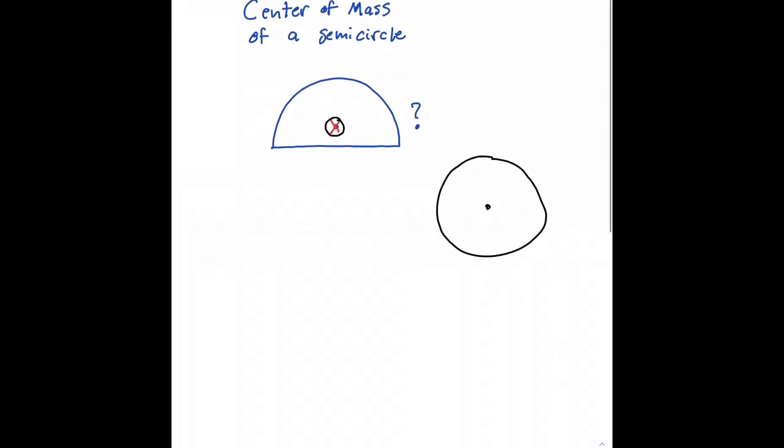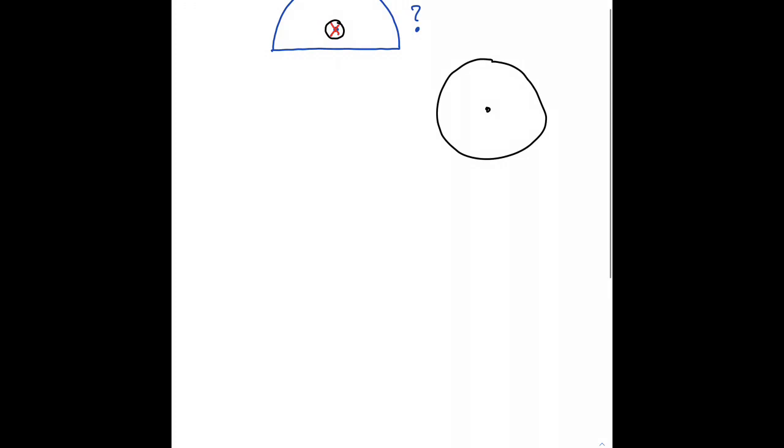So to find the center of mass of a semicircle, we're going to use the same formula we did to find the center of mass of a right triangle. The location of the center of mass along the x-axis is 1 divided by total mass times the integral of x dm.